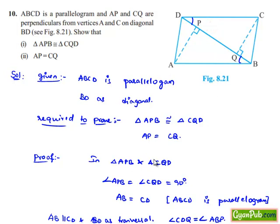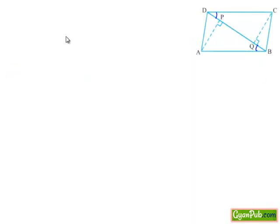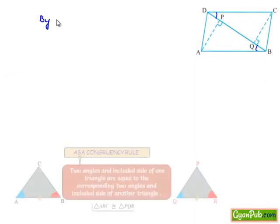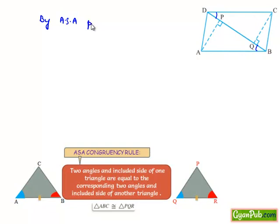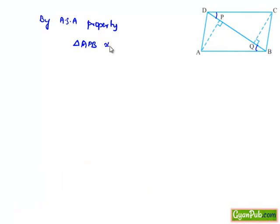In these two triangles, the two corresponding angles and a side are equal. So we can say by ASA property of congruence, triangle APB is congruent to triangle CQD.